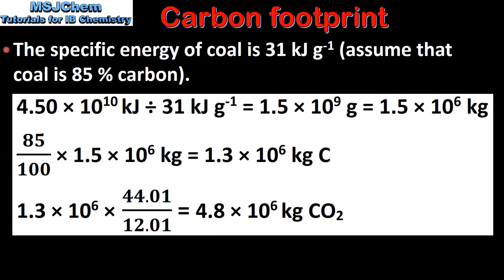We'll start with coal. The specific energy of coal is 31 kilojoules per gram, and we'll assume that coal is 85% carbon. So we divide the total amount of energy by the specific energy of coal, which gives us 1.5 times 10 to the 9 grams or 1.5 times 10 to the 6 kilograms. As mentioned, we'll assume coal is 85% carbon, so we find 85% of the total mass of coal, which gives us 1.3 times 10 to the 6 kilograms of carbon.